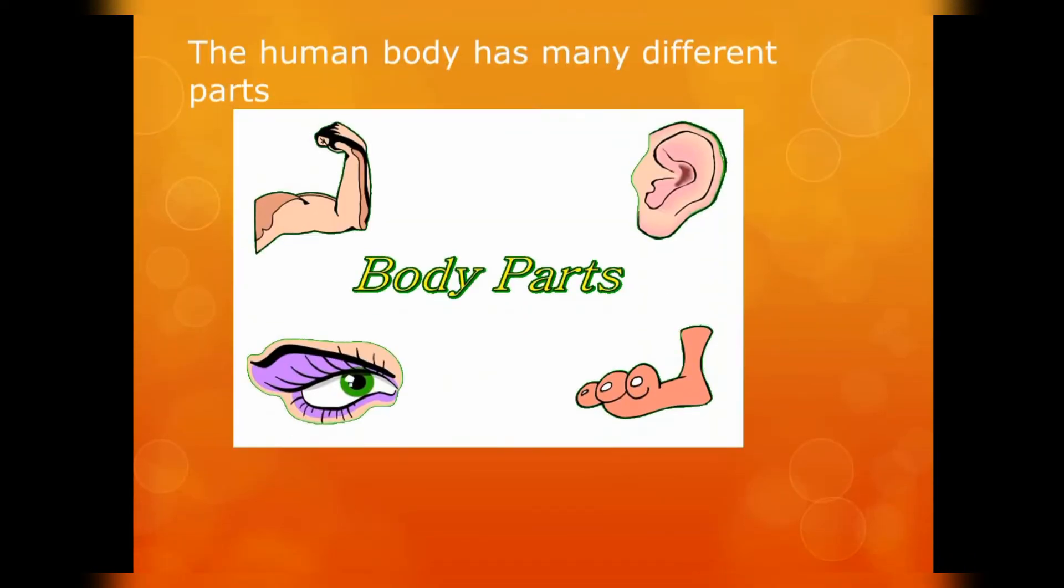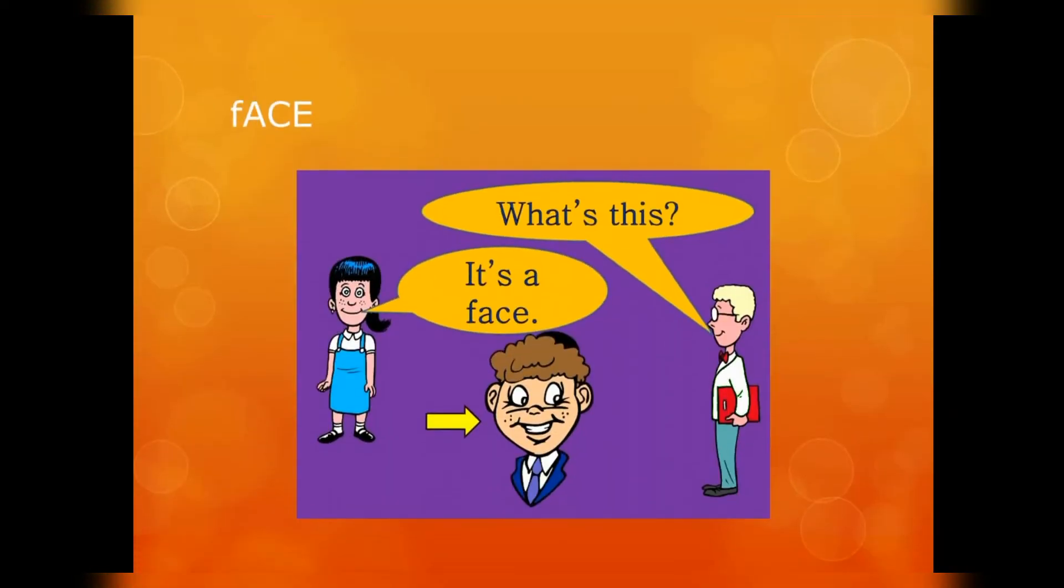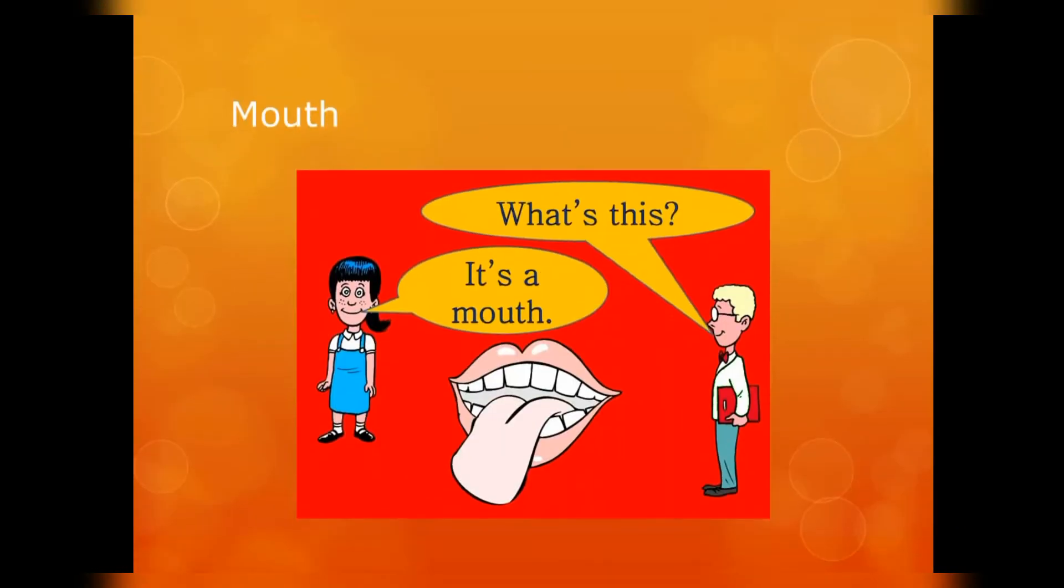The human body has many different parts and every part has a different name. First one is a face. What is this? It's a face. The next one is mouth. What is this? The girl is giving the answer that it's a mouth.